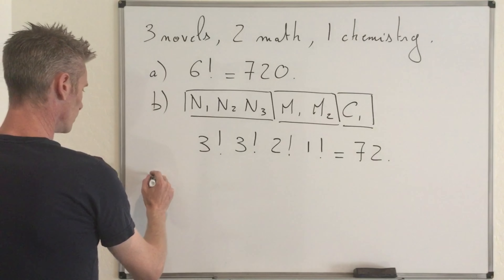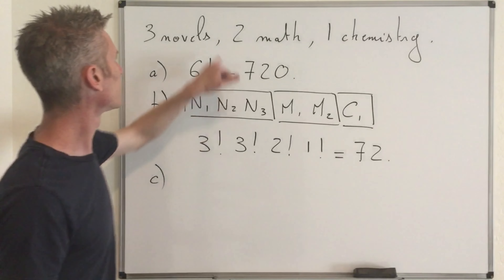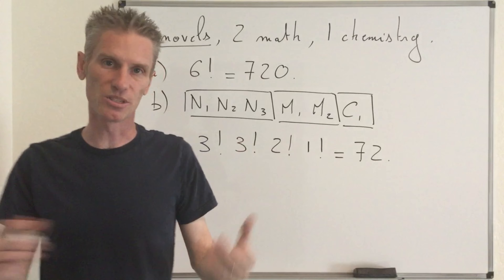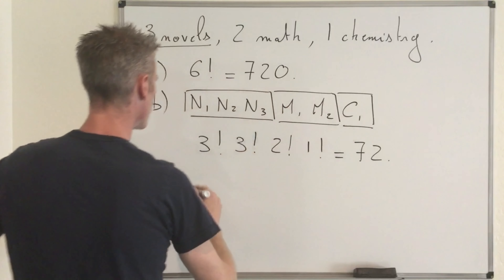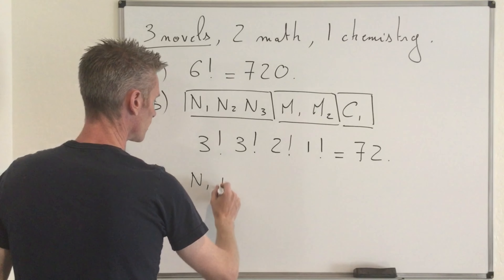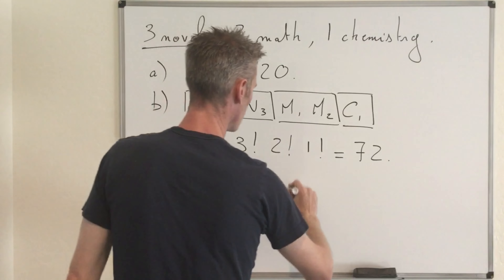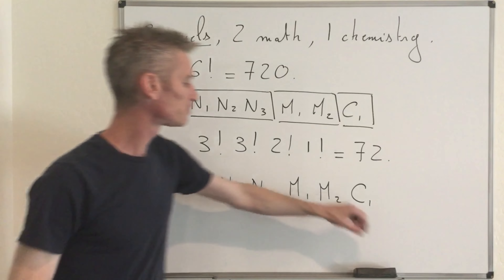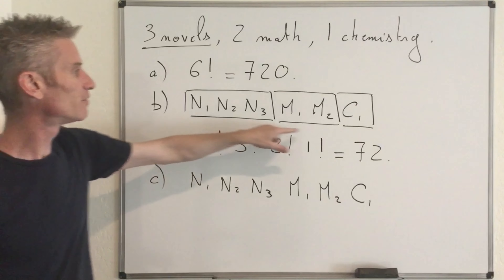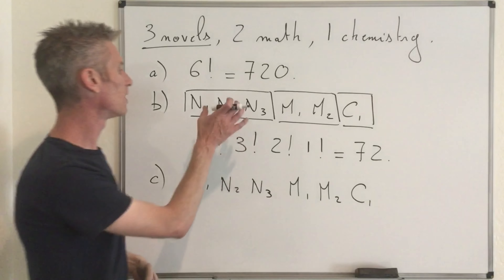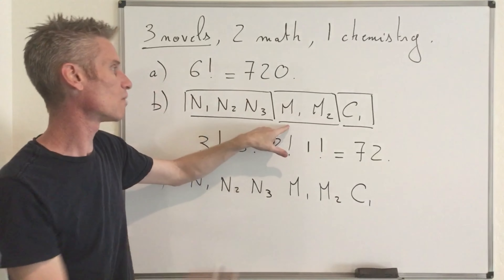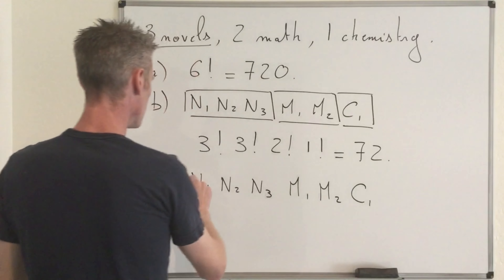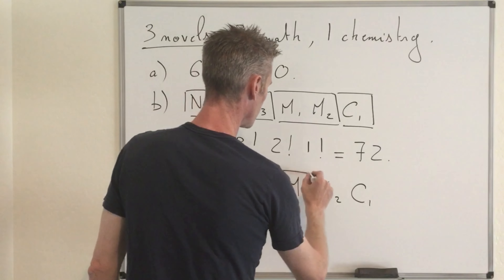Then question C: that's the same thing except that now we assume only the novels must be together, and the other three books can be at any position. So you draw the same picture: N1, N2, N3 as one block. Then for the math books, you have Math 1 and Math 2 each as individual blocks, and Chemistry is C1 as its own block. So instead of having three blocks, you now have four blocks.